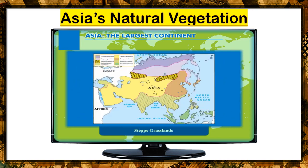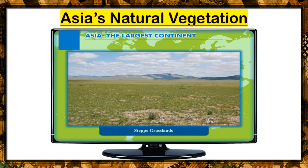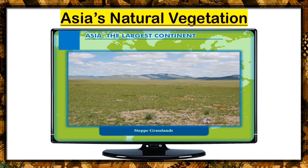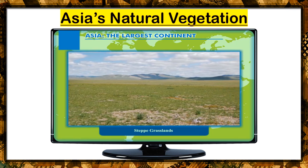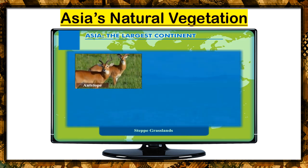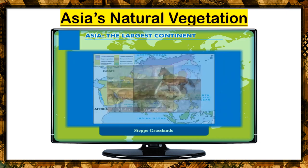Steppe grasslands. This vegetation is found in the temperate climate region towards the south of the taiga belt. The land is covered with short grasses and stunted bushes. Antelope, mules, horses, and wolves are among the common animals found in this region.